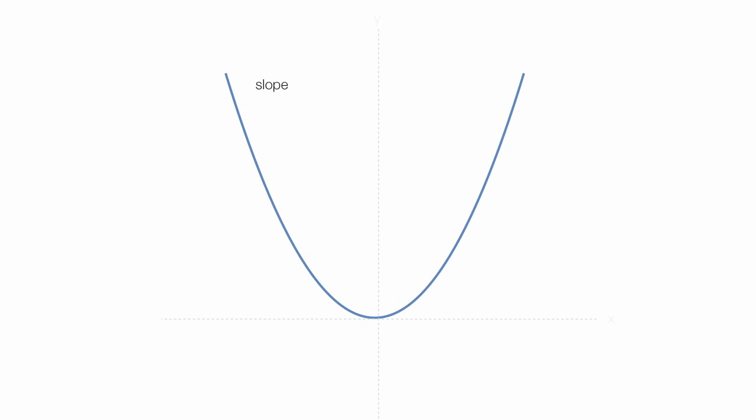For example, if I wanted to know the slope at any point for the line y equals x squared, notice that the slope or the rate of change is not constant on that curve.